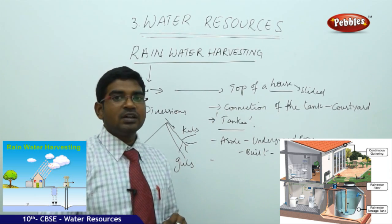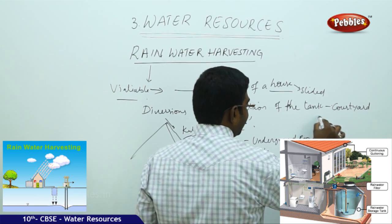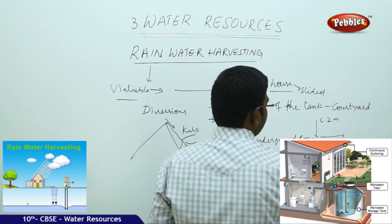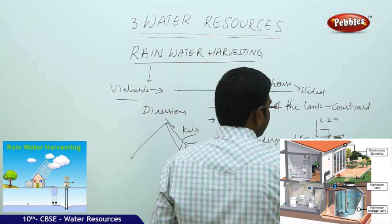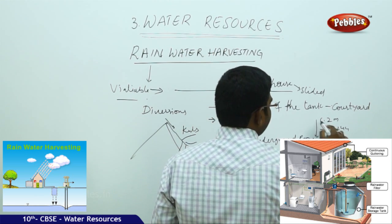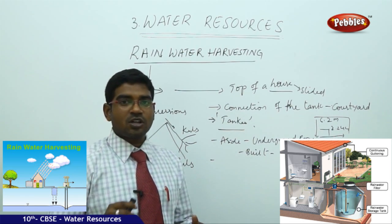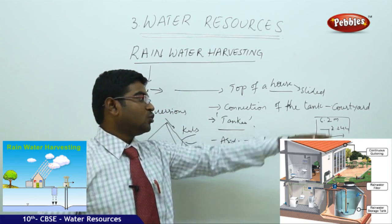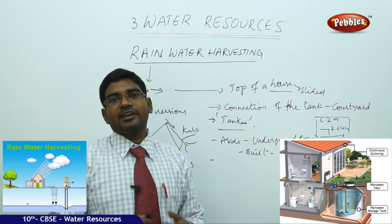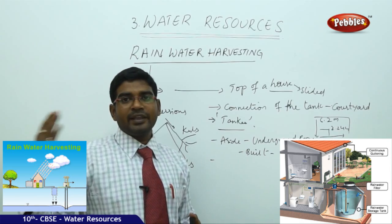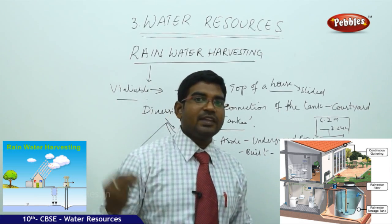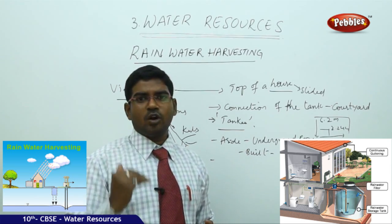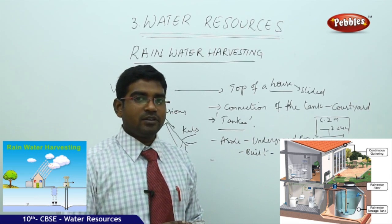Let us look at the dimensions of tankas. Tankas have a depth of 6.2 meters, a breadth of 4.27 meters, and a width of 2.24 meters — a well-planned structure. Once the rains have passed and water reserves become less, they start to use the water preserved in the tankas, which is the most fresh water they can get.